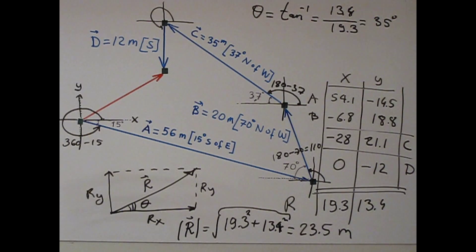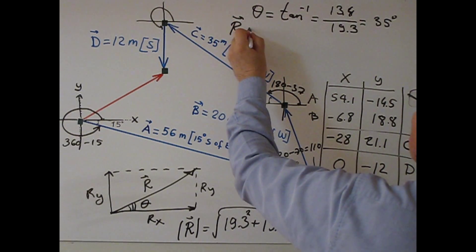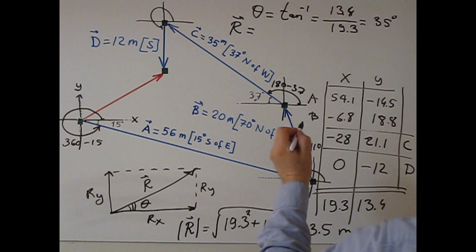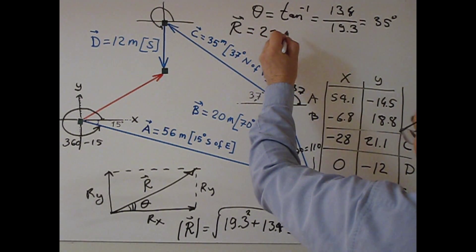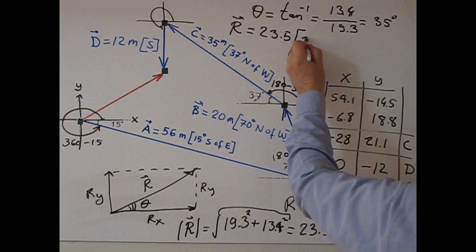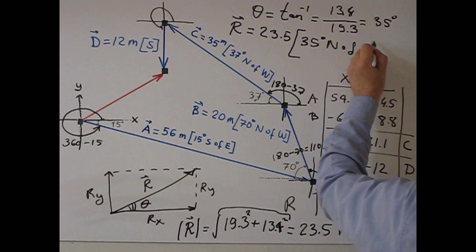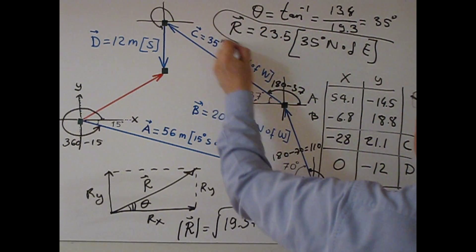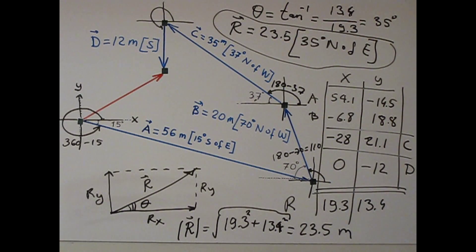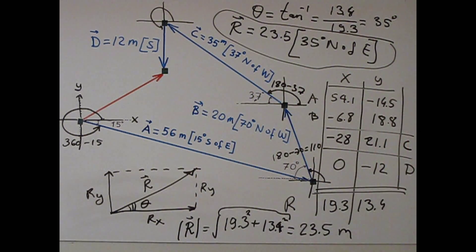So the final answer is: R has a magnitude of 23.5 meters, at 35 degrees north of east. This is the final answer. Thank you very much for watching my video. Have a nice day. Bye.